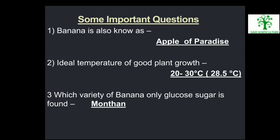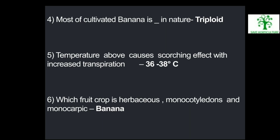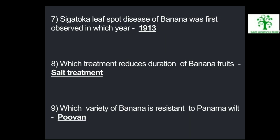Some Important Questions: First, banana is also known as the apple of paradise. Second, ideal temperature for good plant growth is 20 to 30°C. Third, which variety of banana only contains glucose and sugar? Fourth, most cultivated banana is triploid in nature. Fifth, temperature above 36 to 38°C causes scorching effect with increased transpiration. Sixth, which fruit crop is herbaceous, monocotyledonous and monocarpic? — Banana. Seventh, Sigatoka leaf spot disease of banana was first observed in which year? — 1913. Eighth, which treatment reduces the duration of banana ripening? — Salt treatment. Ninth, which variety of banana is resistant to Panama wilt? — Puvan.